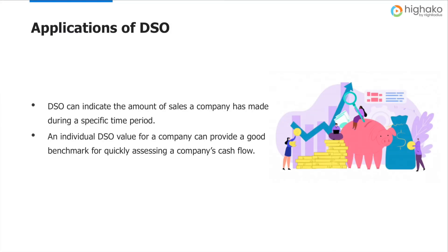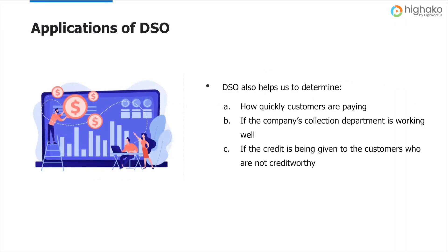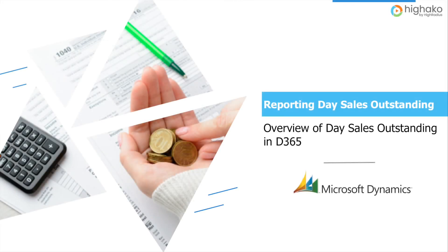DSO tells us about the number of sales made during a particular period. Apart from that, it also helps us assess the cash flow in the organization. DSO also helps us determine how quickly customers pay, how efficient the company's collection department is, and helps us figure out the credit worthiness of a customer.